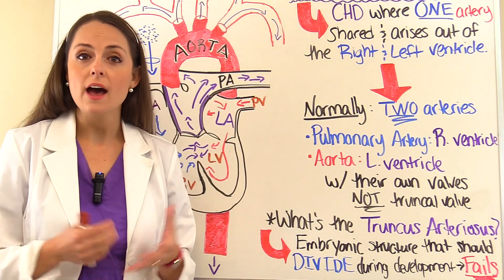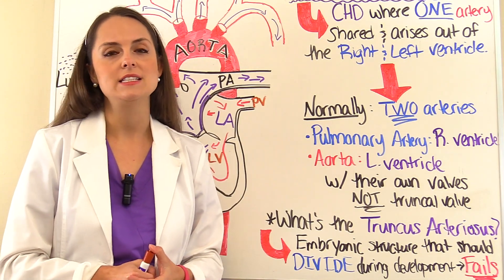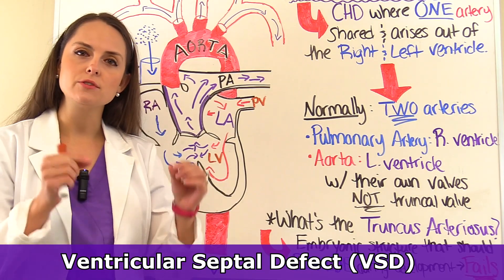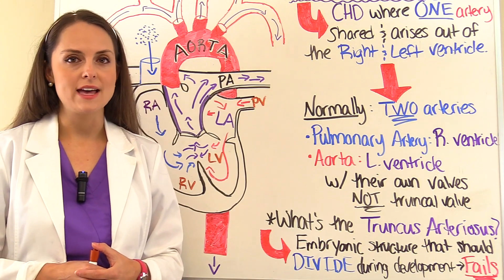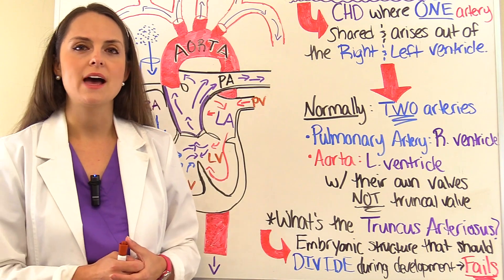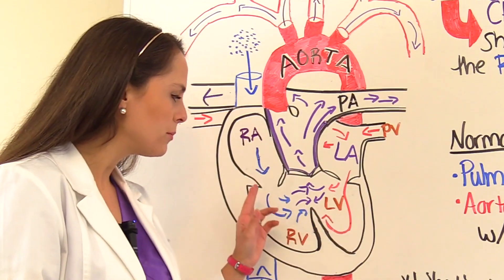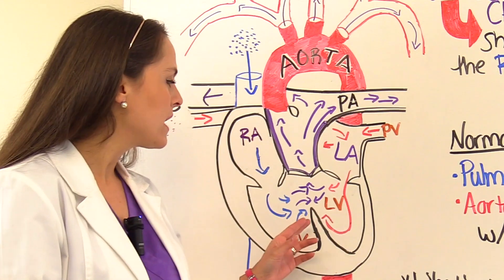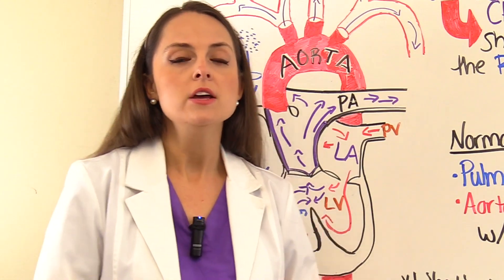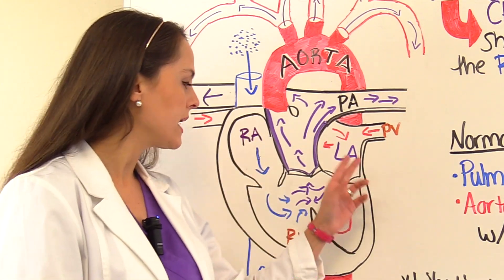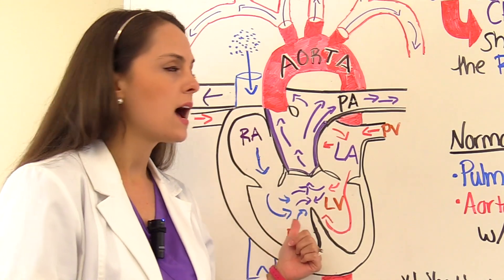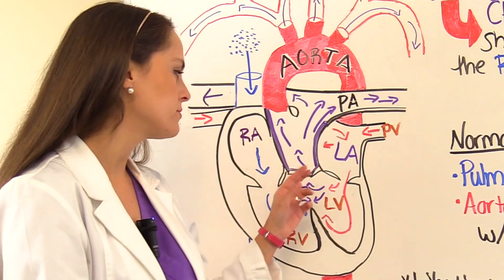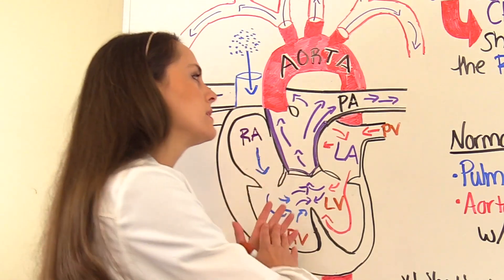In addition to this, there is usually another congenital heart defect present — a VSD, or ventricular septal defect. There is a hole in the septum separating the right and left ventricle, which allows blood to mix. Deoxygenated blood from the right side mixes with oxygenated blood from the left side, creating a purplish, low-oxygen blood. That mixed blood travels up through the truncal valve and the truncal artery, with some going to the pulmonary artery and some to the aorta.